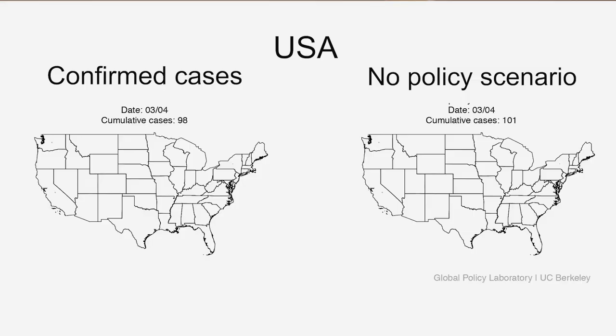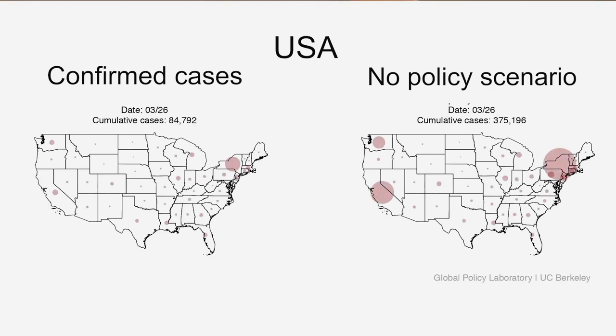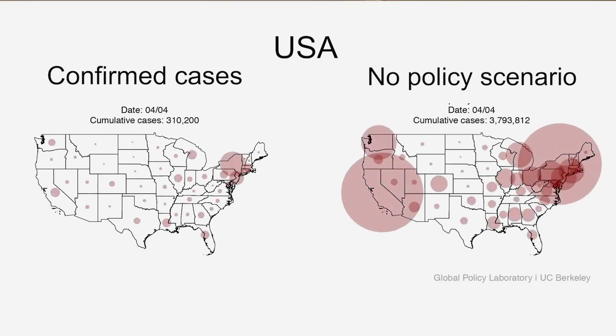We can see the pain — the economic suffering happening in different communities — it's very salient, very tangible. We see when we're losing money. What we don't see is lives that are never lost, people who never get sick because we all took preventive action. What we aim to do with this study is to try and understand what we were getting in return for all of this very painful sacrifice that people are making. If we hadn't shut things down, there would have been roughly 500 million more infections across just the six countries we're looking at.